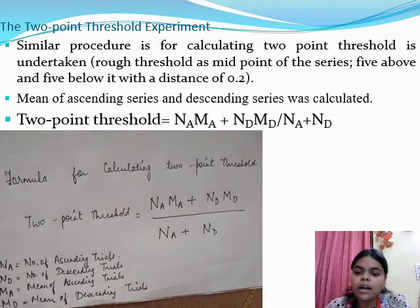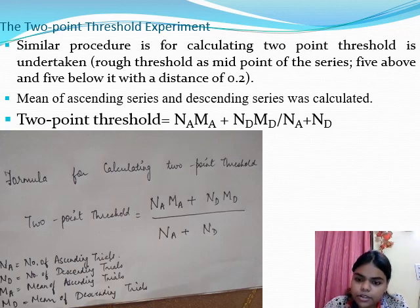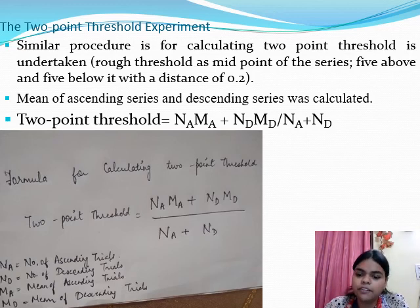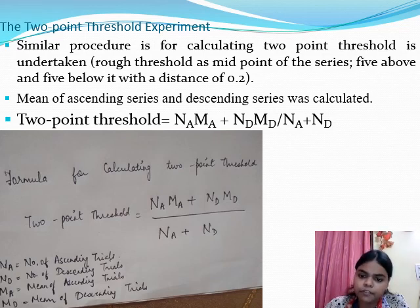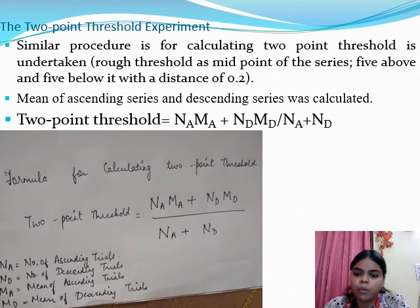After collecting all ten trials in alternate fashion, the mean of the ascending series and the mean of the descending series are each calculated separately from their respective transition points. Then the formula is applied to compute the final two-point threshold.